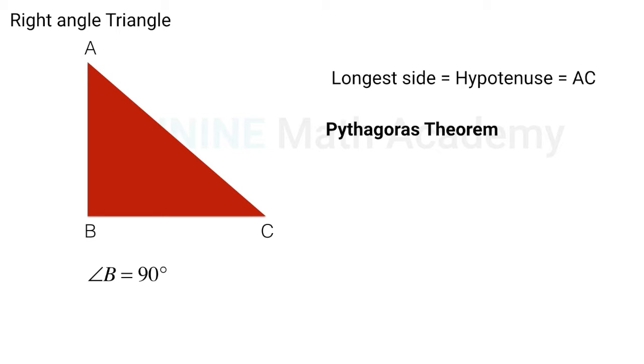We use Pythagoras theorem to find the length of this longest side. Pythagoras theorem states that square of hypotenuse is equal to sum of squares of the other two sides, that is AC² = AB² + BC².